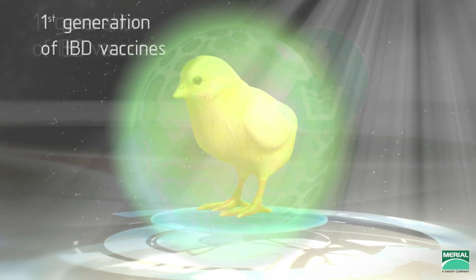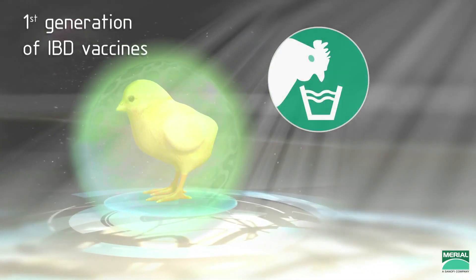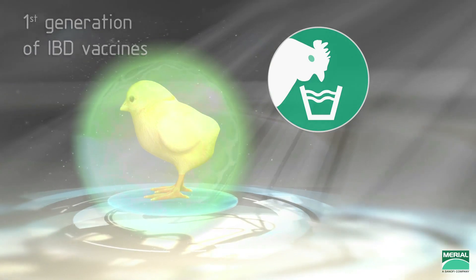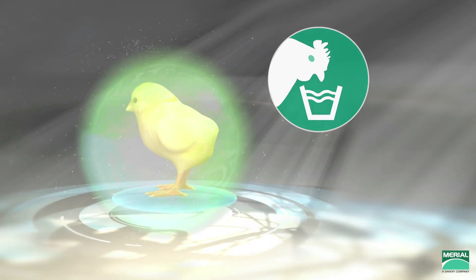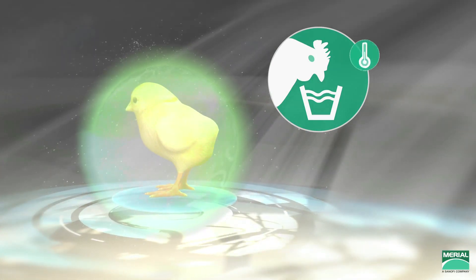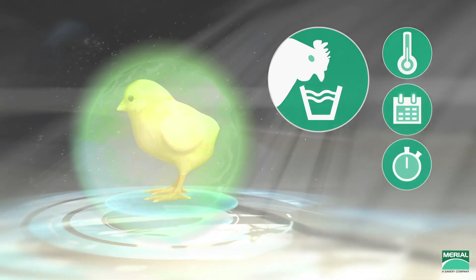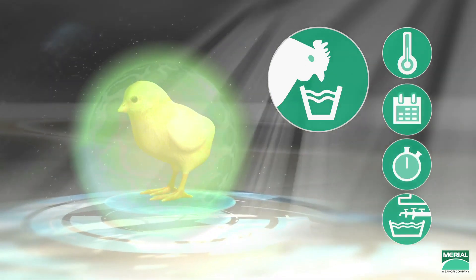First-generation IBD vaccines are administered via drinking water on the farm. There are many reasons for vaccine failures, including not respecting the cold chain, time of vaccination, duration of vaccine take, and water quality.